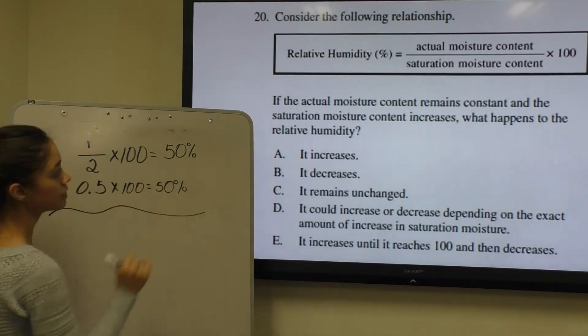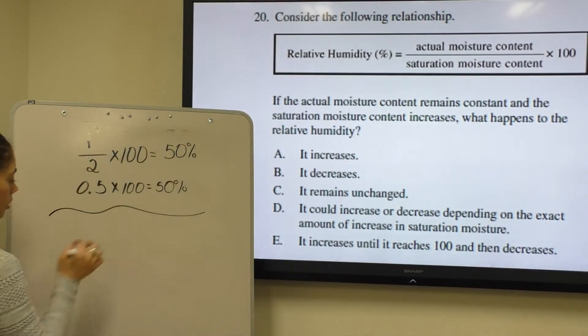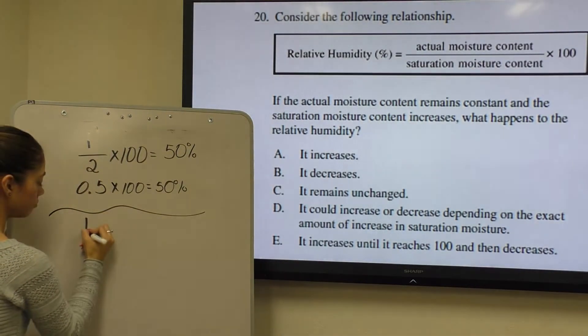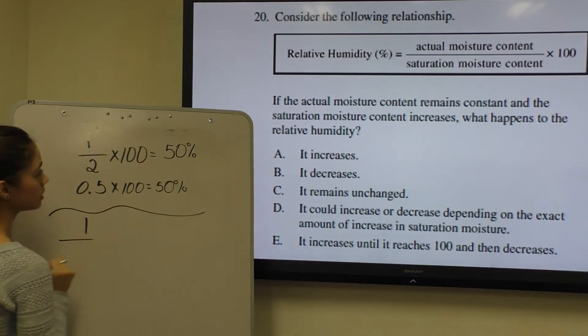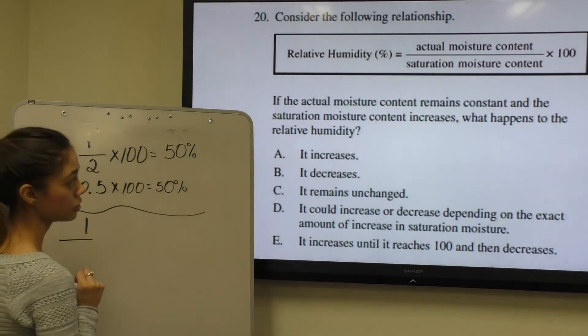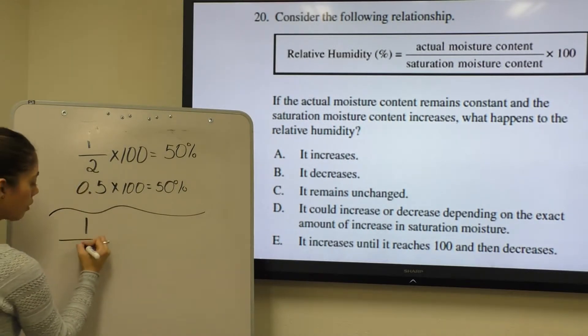Now, they're asking us for actual moisture content to remain the same, so it would remain 1. However, they're asking us for saturation moisture content to increase. So let's say it goes up to a 4.